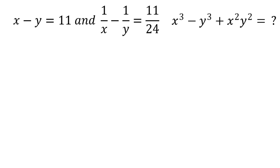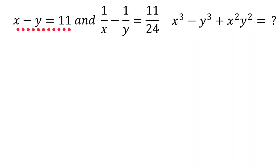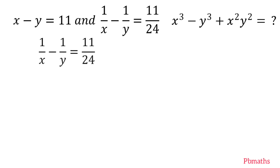Here we need to find the value of x cube minus y cube plus x square y square. We have the value of x minus y which equals 11. Let's try to find out the value of xy. To find out that, let's take 1 by x minus 1 by y equals 11 by 24. Then the LCM is xy, so we can write y minus x divided by xy equals 11 by 24.